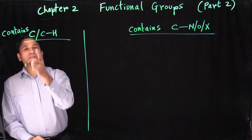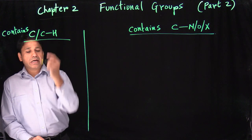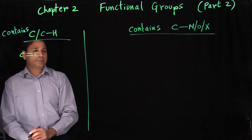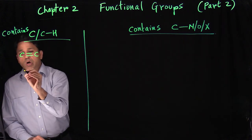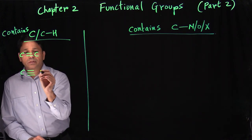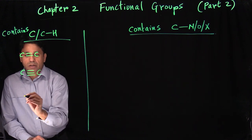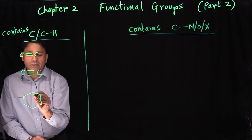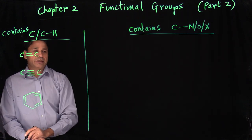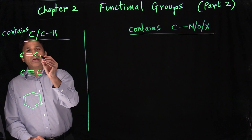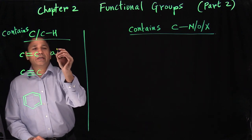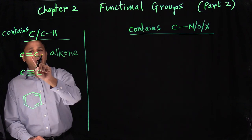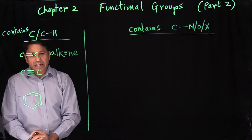Category one is when you only have carbon and carbon-hydrogen bonds. For example, a carbon-carbon double bond. When you have a carbon-carbon double bond, we call that the alkene functional group.